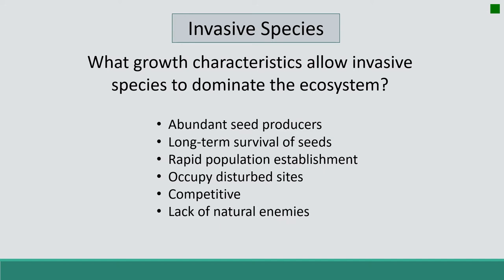Invasive species also lack natural enemies. These can include insects, microbes, or even animals that control populations in their native environments.